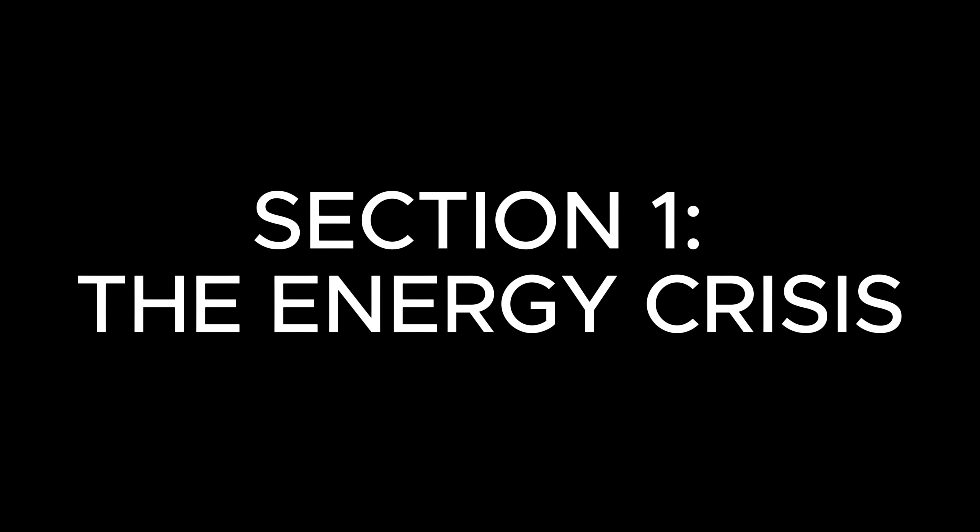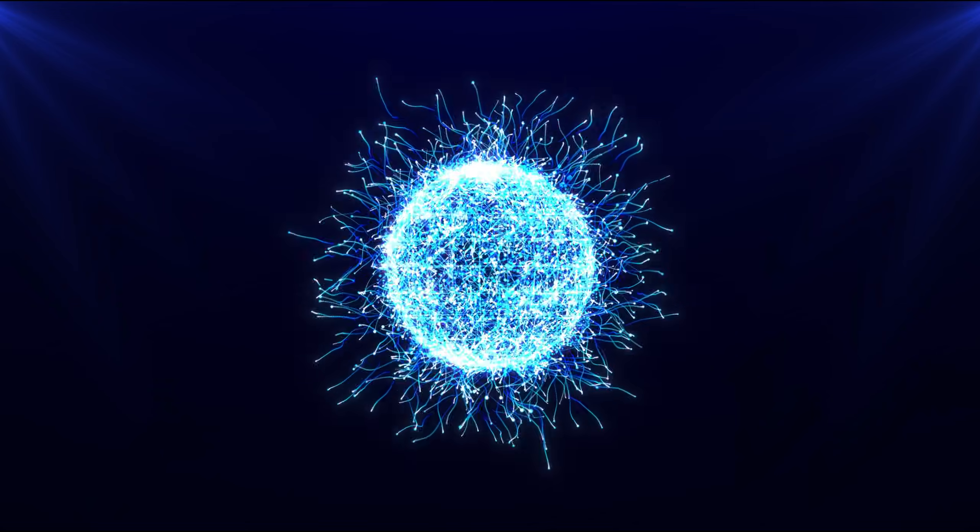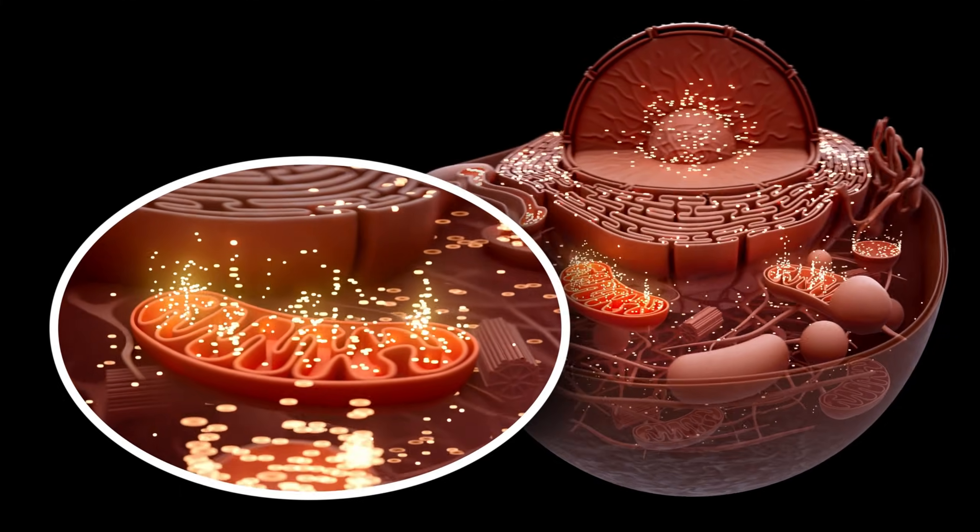Section 1: The Energy Crisis. Your brain is 2% of your body weight but devours 20% of your energy. Every thought, every memory, every decision runs on ATP, the energy currency your mitochondria produce.